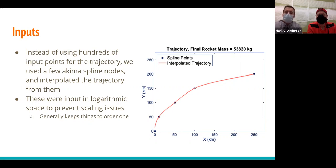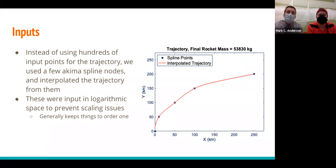Our grader suggested using splines — having only a few control points and interpolating between them. That's exactly what we did. We reduced to just five input points and interpolate 2,000 points between them. This was very beneficial because the optimizer runs faster with fewer variables. We also input these variables as their logarithms to prevent scaling issues and keep everything at order one. The x-locations vary while the y-locations are fixed at a set delta Y between each point.